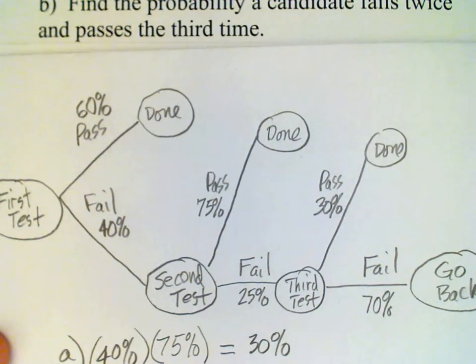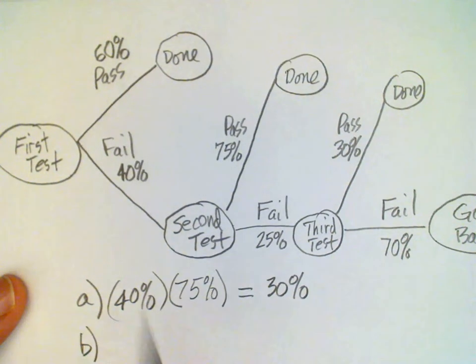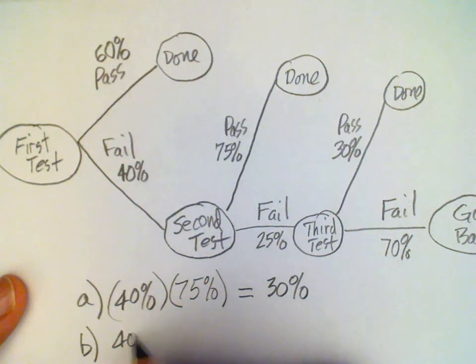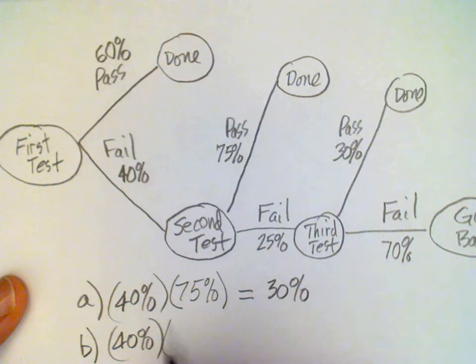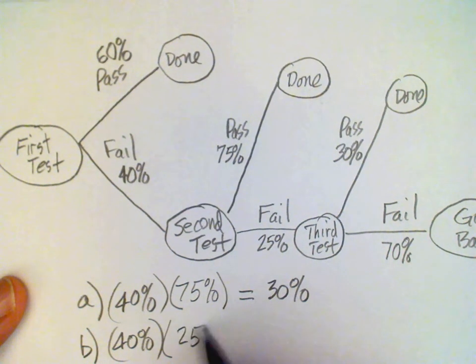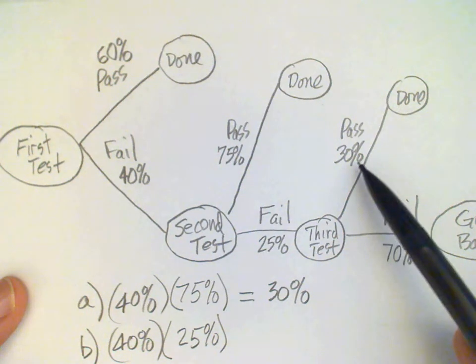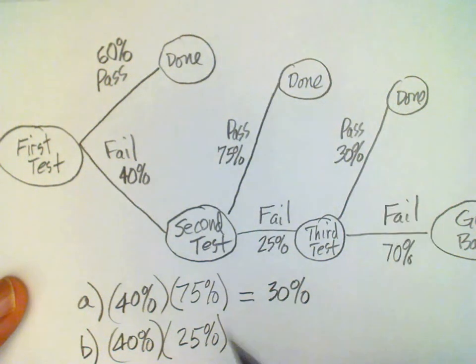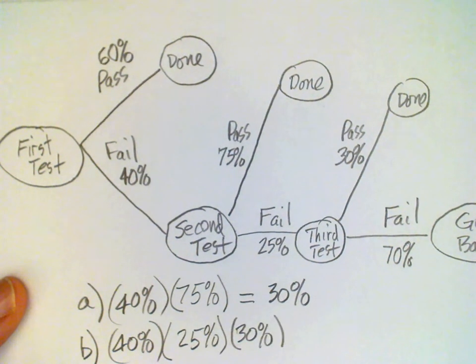Now we have a second question here. It says, find the probability that the candidate fails twice and then passes the third time. So fails twice: fails once is 40%, fails the second time 25%, and then passes the third time, that's 30%. Multiply these together: 25% of 40% is 10%, 10% of 30% is 3%.